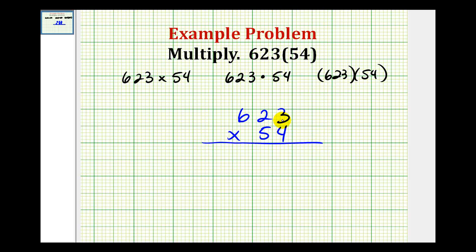We'll start by multiplying by 4. So, we'll have 4 times 3, that's 12. Carry 1 over to the tens column. 4 times 2 is 8 plus 1, that'll be 9. And then we have 6 times 4, that'll give us 24.